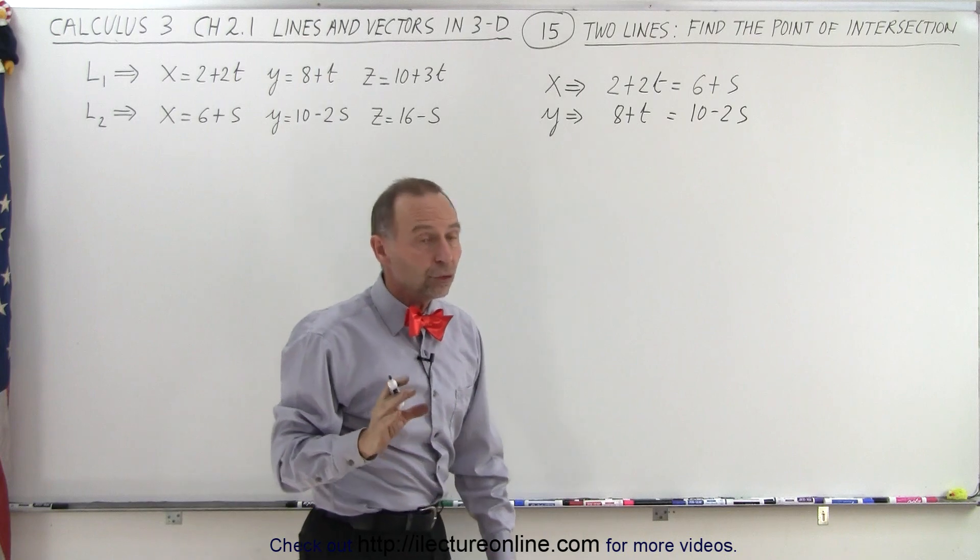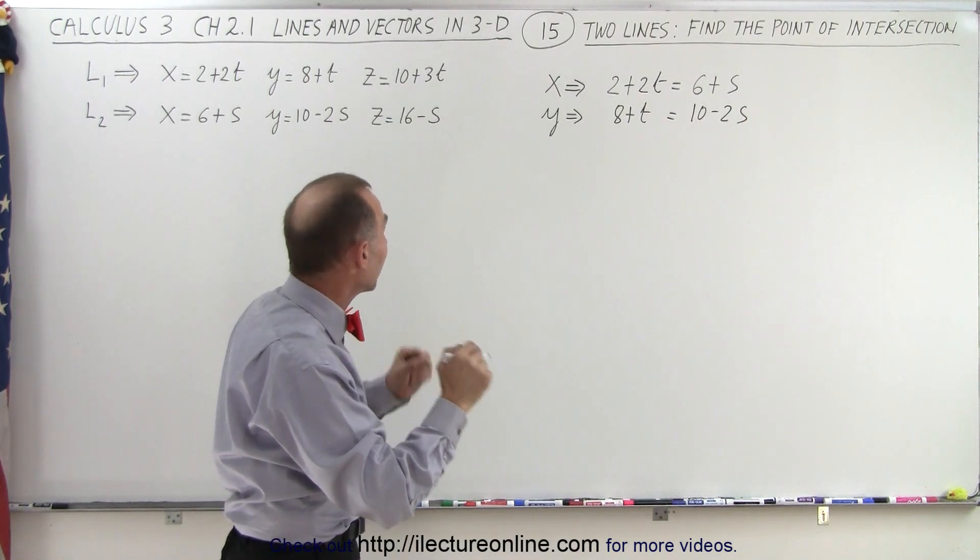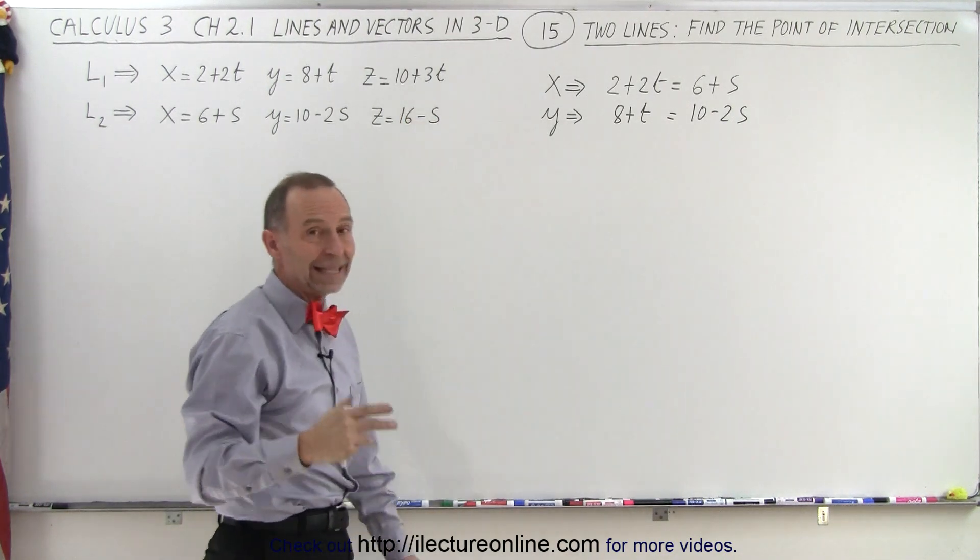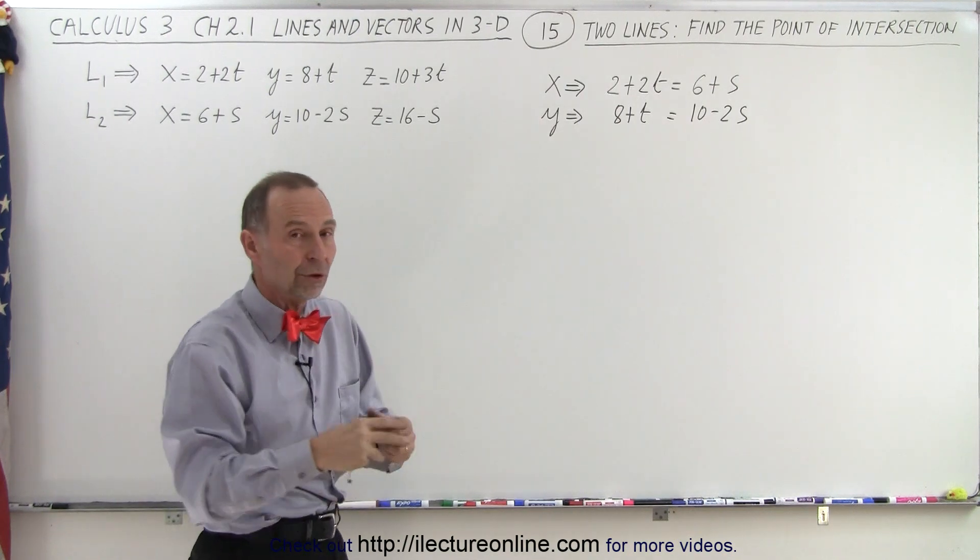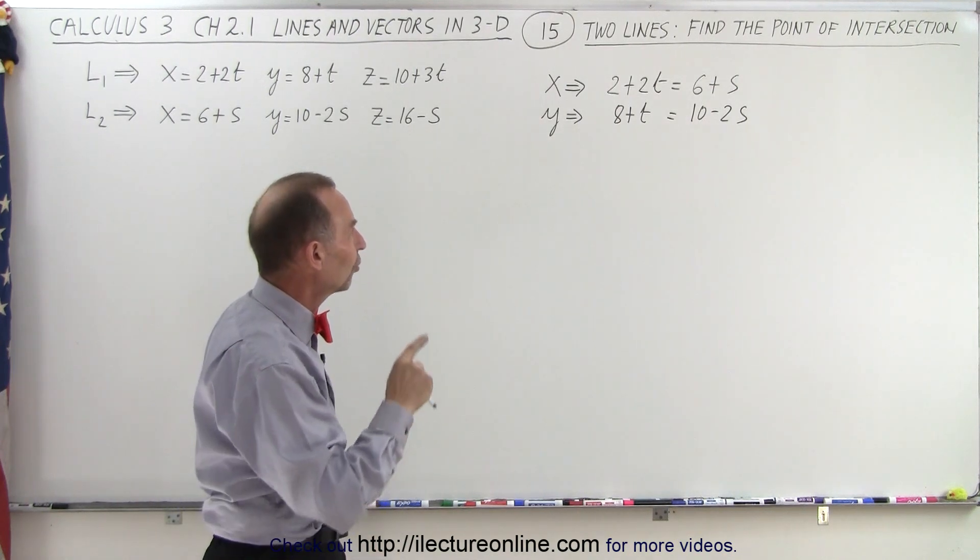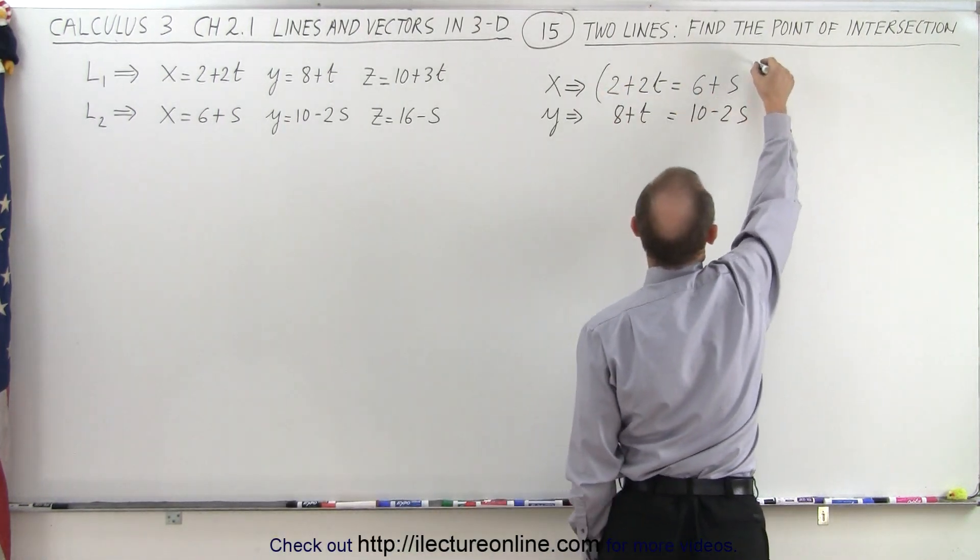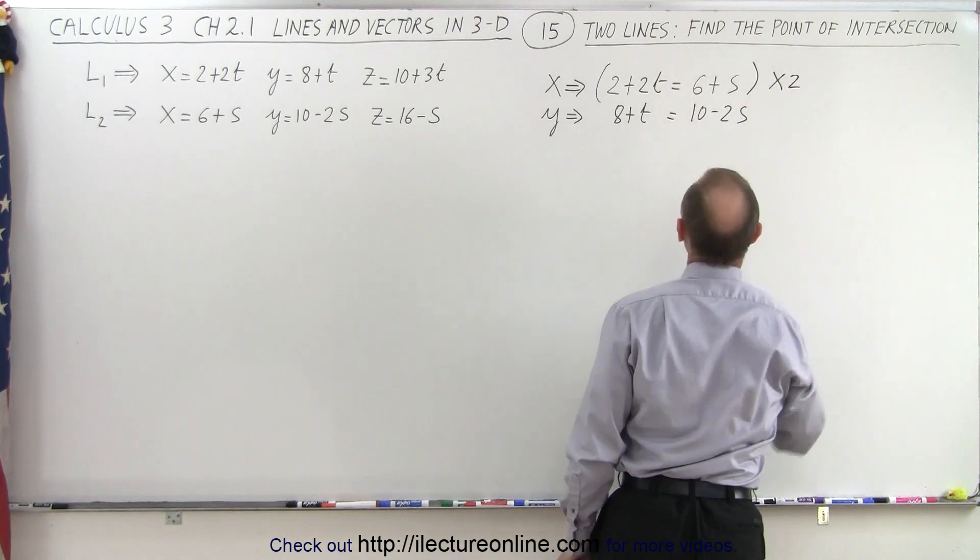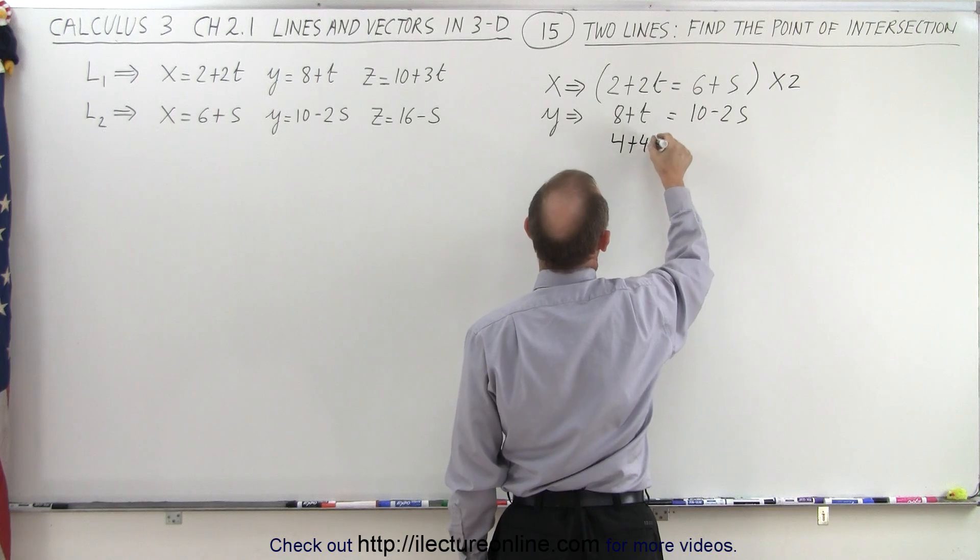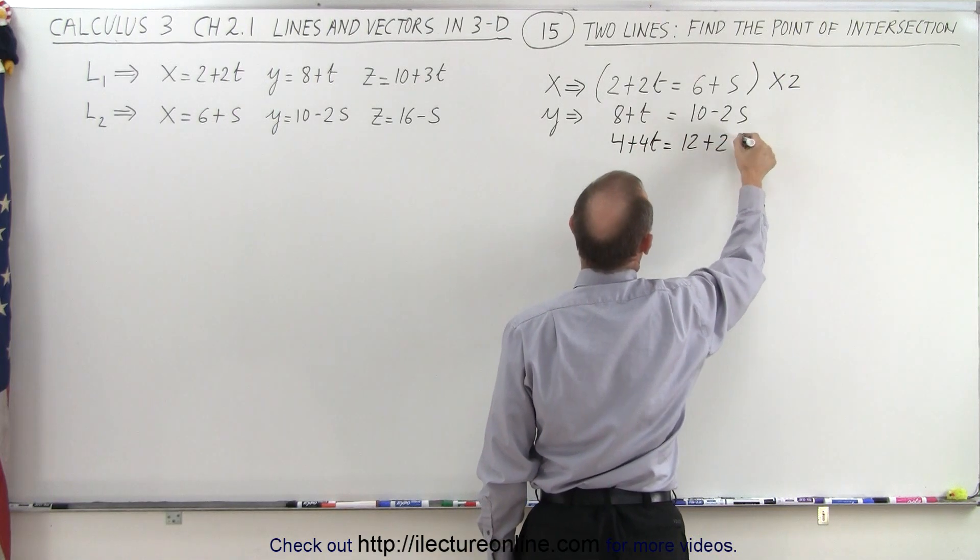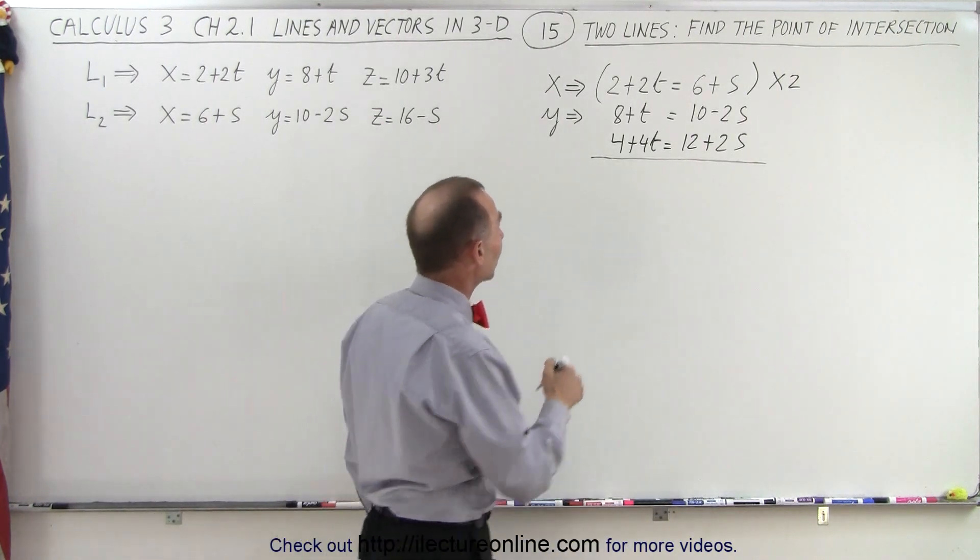Now if we solve those two equations simultaneously for t and s, and then take those two values and plug them into the third set of equations, and they match, then we have a point where the two lines cross. So we need to solve first these two equations simultaneously. What we're going to do is multiply the top equation by 2 and add it to the second equation. So we get 4 plus 4t is equal to 12 plus 2s. Notice why we did that, because this way the s's will cancel out.